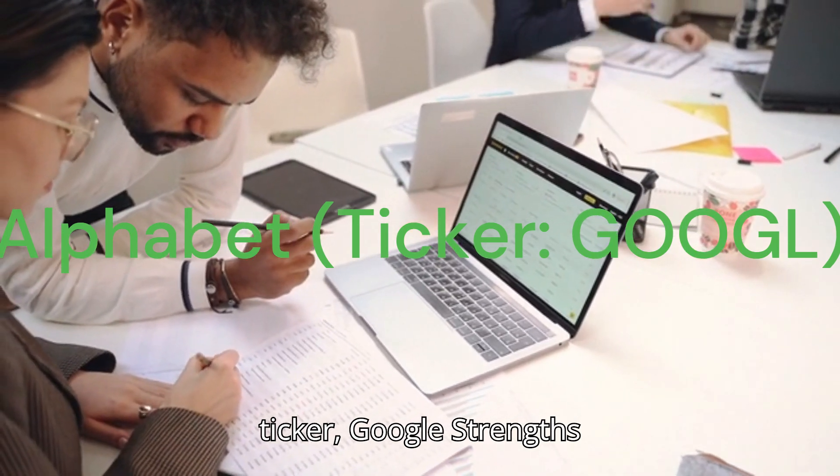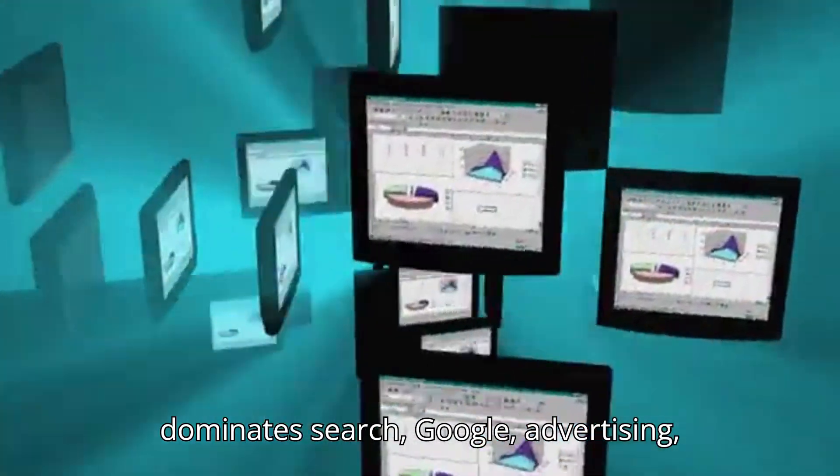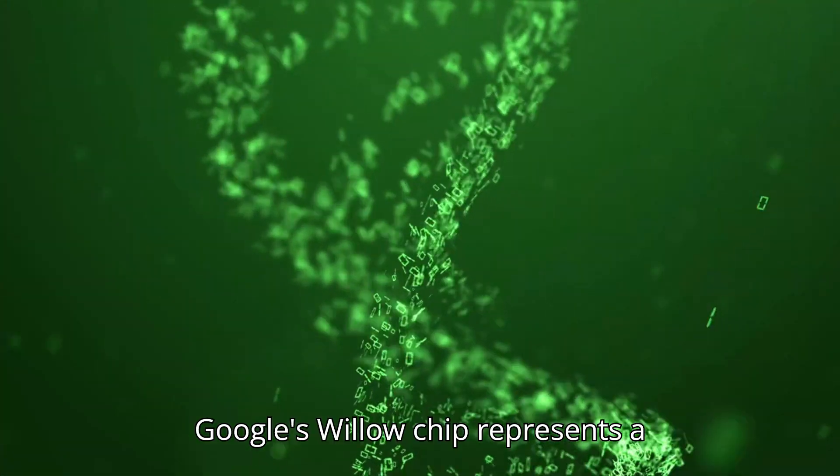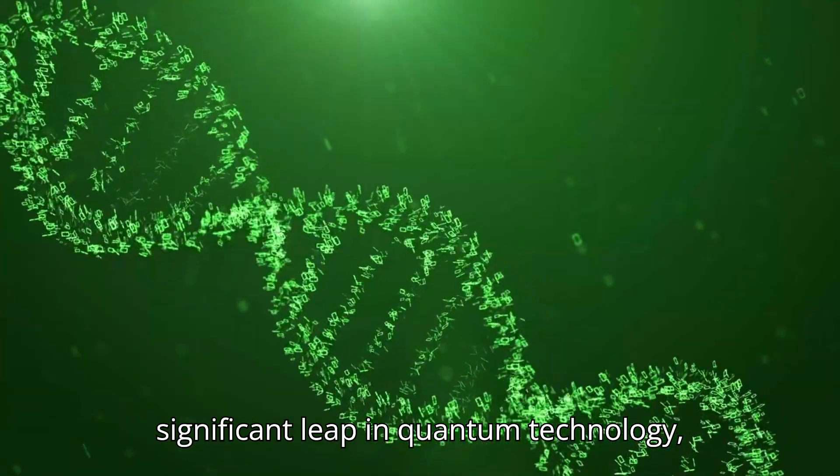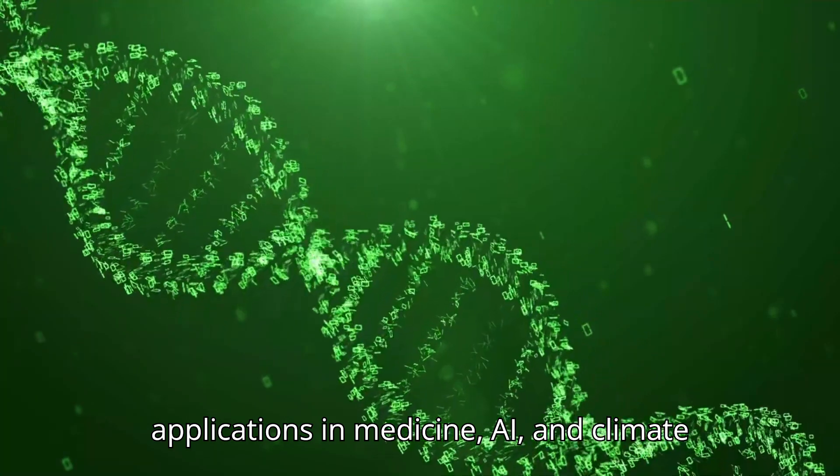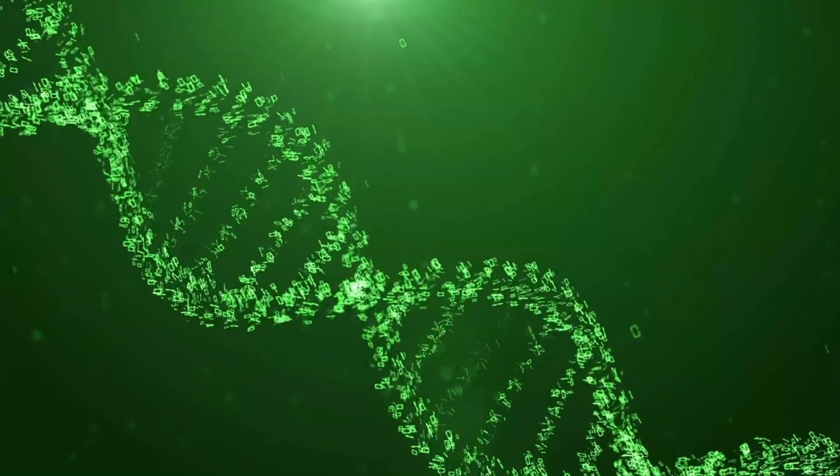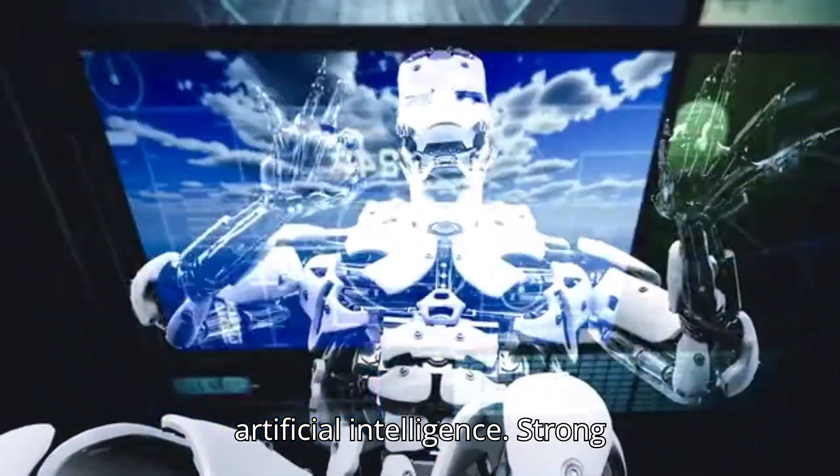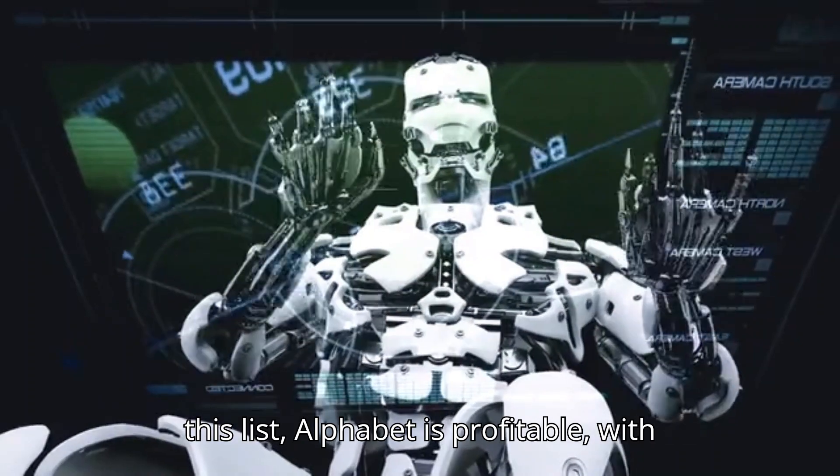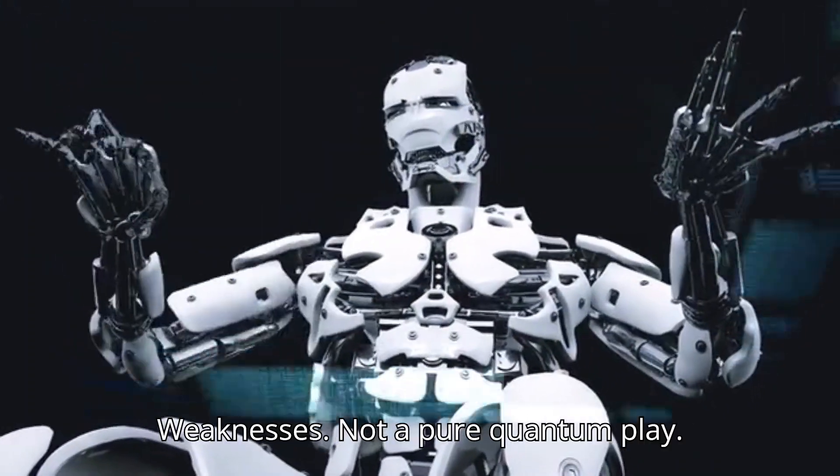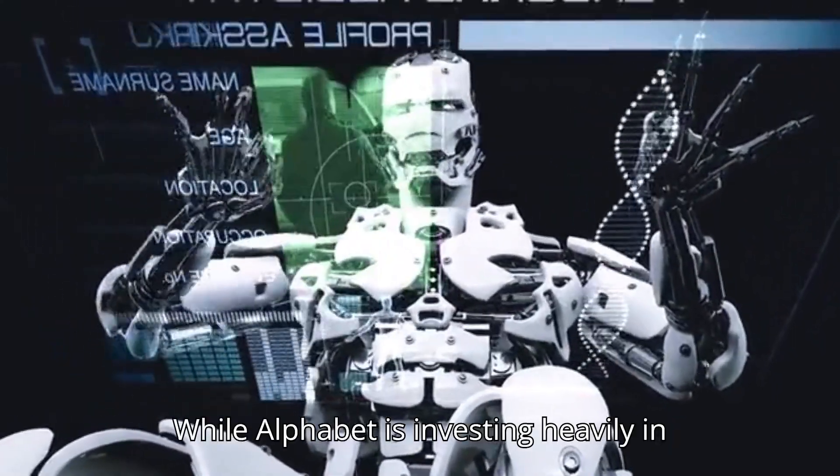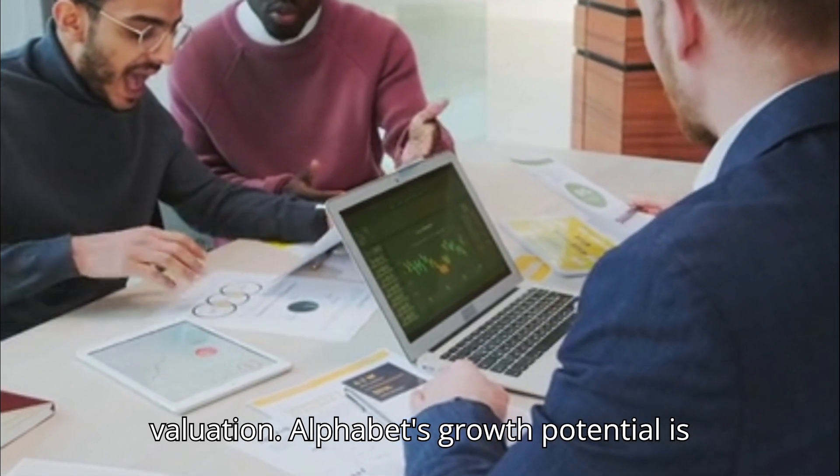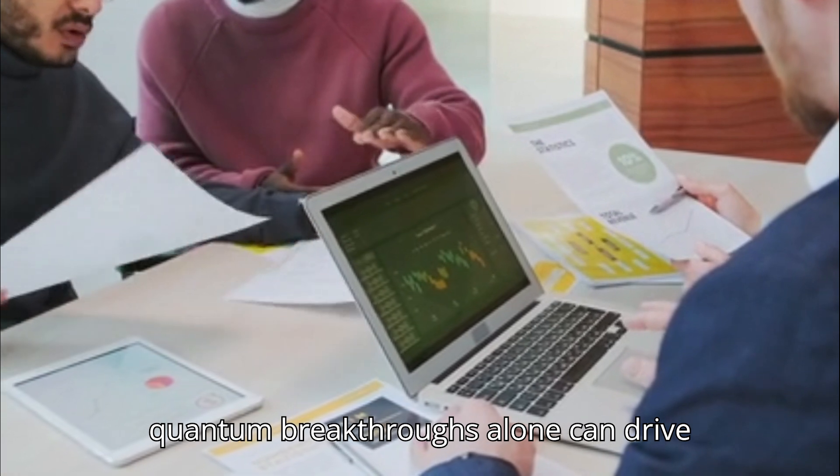Five: Alphabet, ticker Google. Strengths: Diversified revenue streams. Alphabet dominates search (Google), advertising (YouTube), and cloud computing, providing a stable foundation. Quantum innovation—Google's Willow chip represents a significant leap in quantum technology, potentially unlocking massive applications in medicine, AI, and climate research. AI leadership: Alphabet's Gemini large language model solidifies its position as a leader in artificial intelligence. Strong financials: Unlike the other companies on this list, Alphabet is profitable, with consistent revenue and earnings growth. Weaknesses: Not a pure quantum play. While Alphabet is investing heavily in quantum computing, it's just one part of a much larger business. Growth versus valuation—Alphabet's growth potential is high, but its size limits how much quantum breakthroughs alone can drive stock performance.